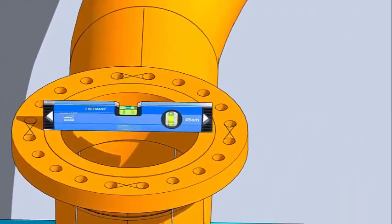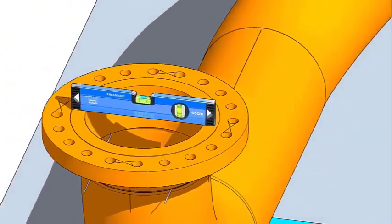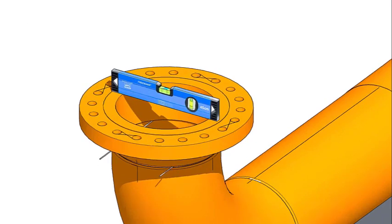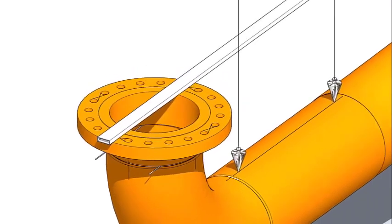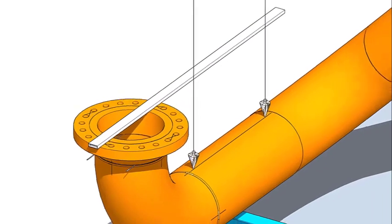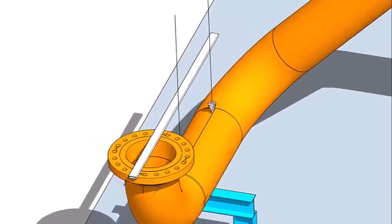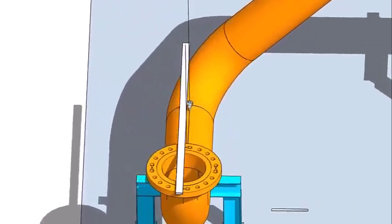Check the transverse level of the flange. Now put the straight edge on the flange face longitudinal to the pipe centerline as shown. The edge of the straight edge must be sitting exactly on the centerline of the flange.